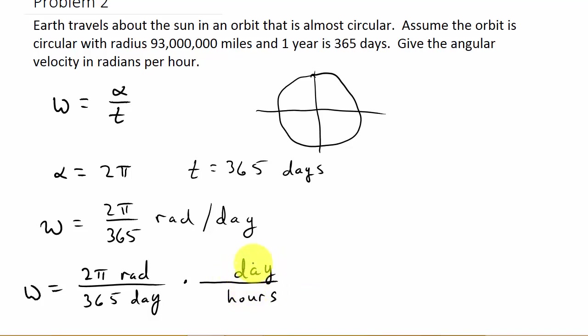Well, what do we know the relationship between days and hours? We know one day has 24 hours. See that? And so what does that do? That cancels days and I'm left with radians per hour.